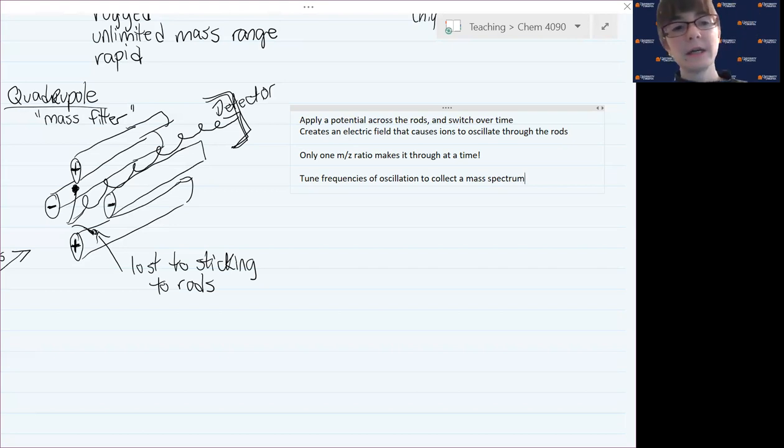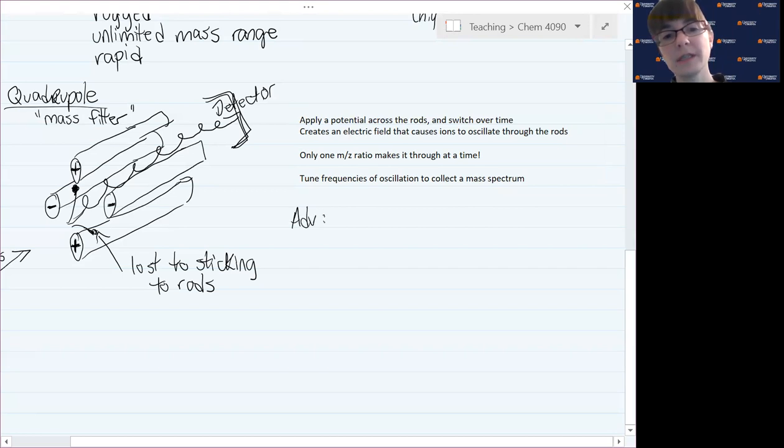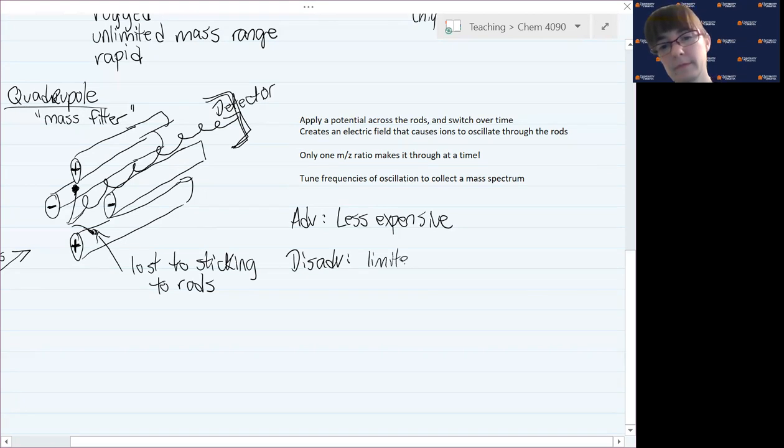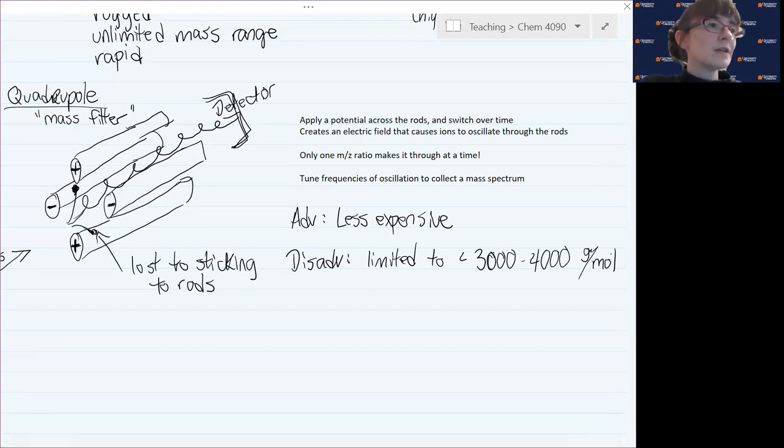That's why we call this a filter because only one m over z molecule makes it through at a time. It turns out, even though this is perhaps more conceptually complicated, it's actually less expensive because it doesn't require as high of a vacuum pull in order to maintain it. But it has some limits on the mass range. About three or maybe 4,000 grams per mole is usually all that we can detect with this. If it's bigger than that, we need to choose a different type of mass analyzer.